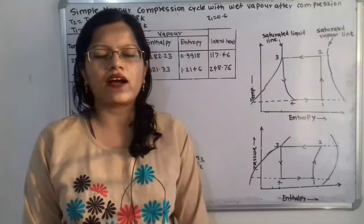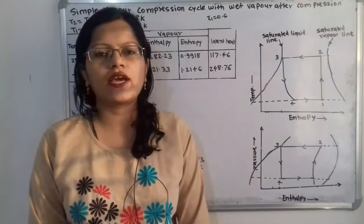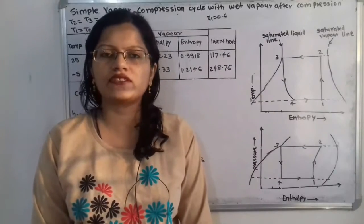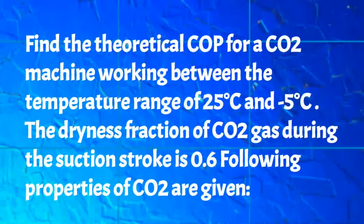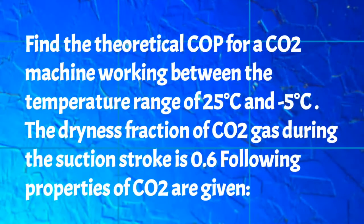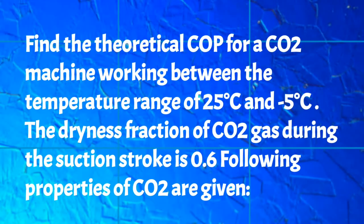Hello friends, this is Priyanka. Today we are going to solve a problem on vapor compression cycle with wet vapor after compression. Find the theoretical coefficient of performance of a carbon dioxide machine working between the temperature range of 25 degree Celsius and minus 5 degree Celsius. The dryness fraction of carbon dioxide gas during the suction stroke is 0.6.